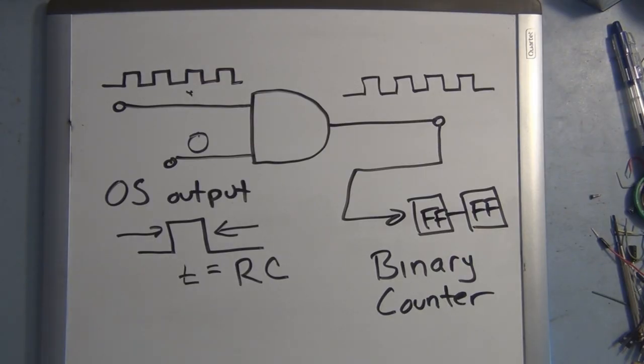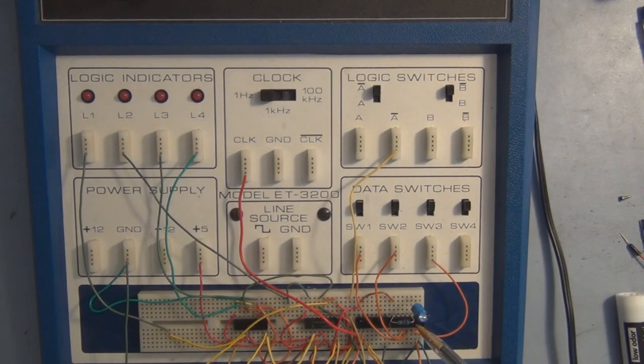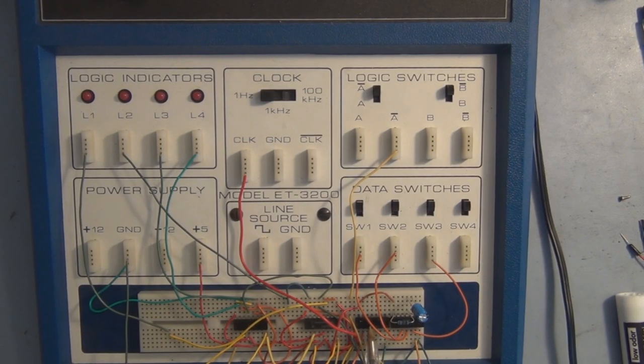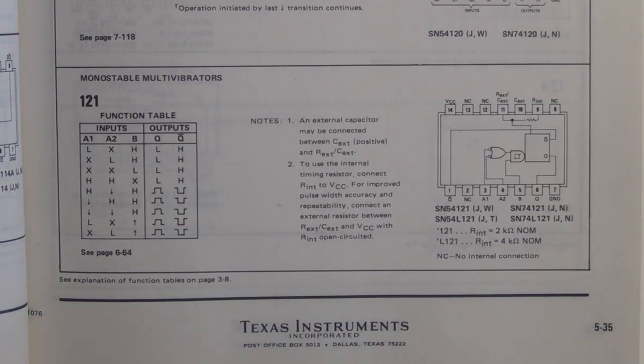It's a binary counter and it will count for this period of time determined by the RC time constant. And then once this goes low, once this is zero, these clock pulses will be prevented from going through the AND gate so it will stop counting.